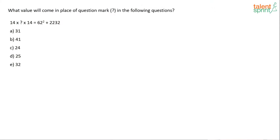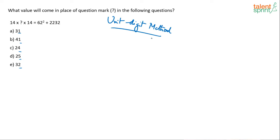Moving on to question 2: 14 × ? × 14 = 62² + 2232. Find what comes in place of the question mark. Looking at the options, most have different unit digits, so I can apply the unit digit method. The only risk: if the last digit turns out to be 1, options A and B both end in 1, causing confusion. Options C, D, E end in 4, 5, 2 respectively.